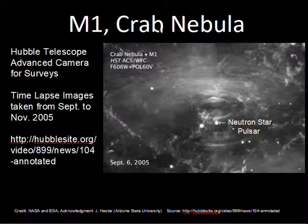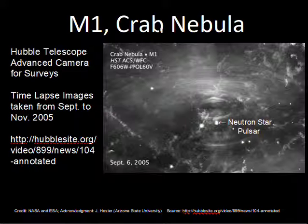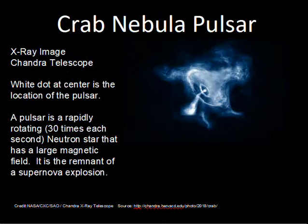From the Hubble Telescope, there is a short GIF movie that you can view where you can see the material move outward from the pulsar. There's a URL to take advantage of that. Hubble took pictures from September 2005 to November 2005, showing there's a lot of activity inside the nebula.